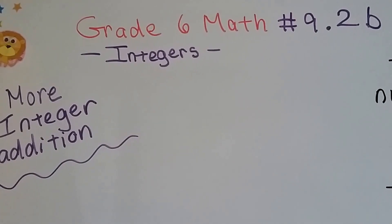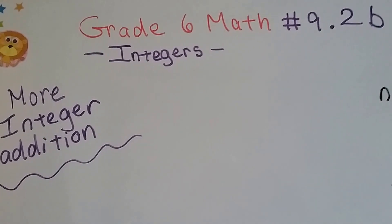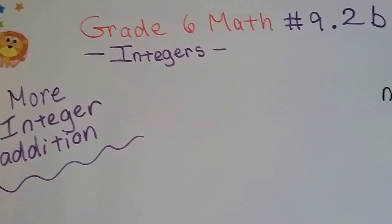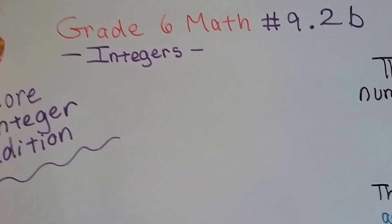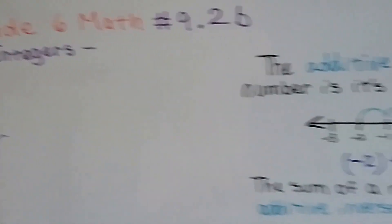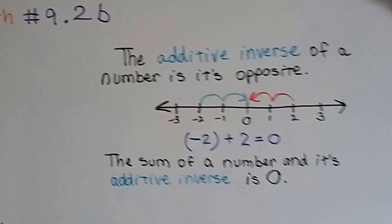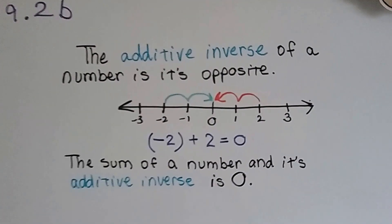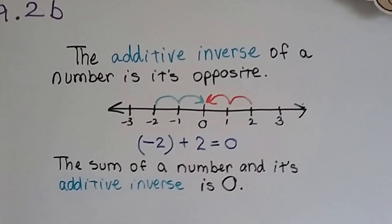Grade 6 math, number 9.2b — more integer addition. This is for people who still need a little bit more guidance.